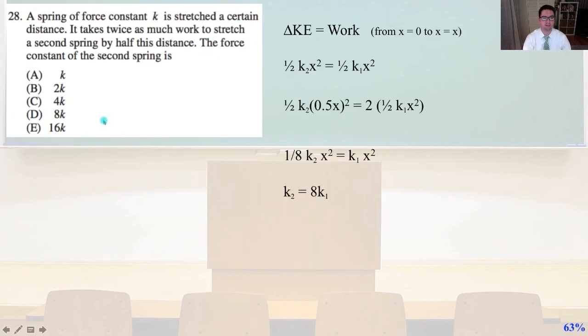Number 28. A spring of force constant K is stretched a certain distance. It takes twice as much work to stretch a second spring by half this distance. The force constant of the second spring is... The change in kinetic energy equals the work. And that's going to be from X equals 0 to X equals X. 1 half K2 X squared equals 1 half K1 X squared. And we have 1 half K2 times 0.5 X, that quantity squared equals 2 times, remember twice as much work, 2 times 1 half the quantity K1 X squared. 1 over 8 K2 X squared equals K1 X squared. K2 simply equals 8 times K1. That is answer D.